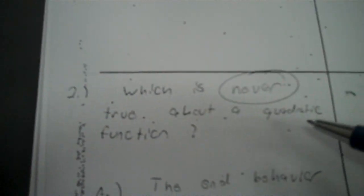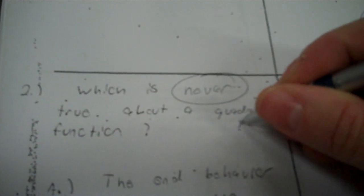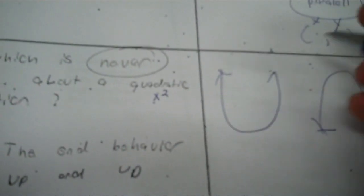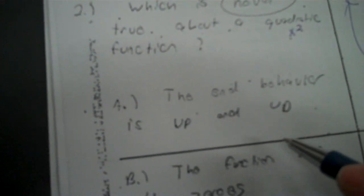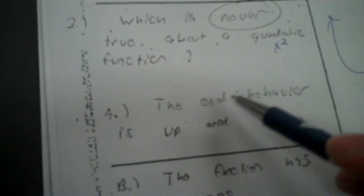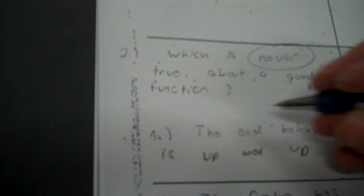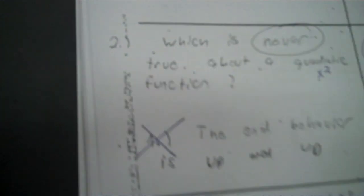Which is never true about a quadratic equation? A quadratic equation means it has X to the second as the highest degree. Here's what those look like — they're parabolas. The end behavior being up and down is never true — it's either up and up or down and down on a quadratic equation. It can never be up-down, so A is not the answer.